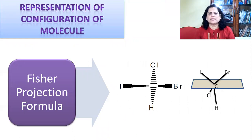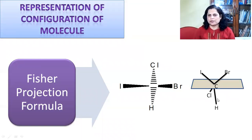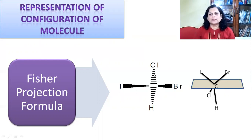There are two ways to represent the configuration of molecules and the arrangement of atoms. The first is the Fischer projection formula. In this formula, carbon is in a plane, bromine and iodine are above the plane (shown by thicker lines), and chlorine and hydrogen are below the plane (shown by dotted lines). So carbon, iodine, and bromine with thicker lines means they are above the plane, and dotted lines mean they are below the plane.